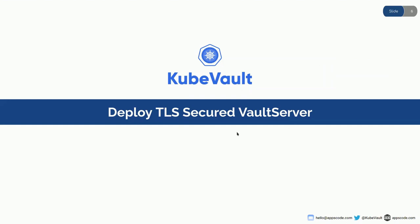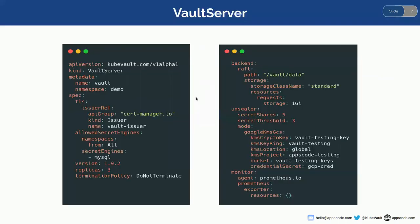Before deploying the Vault server, let's take a look at the YAML file. In the metadata section I provided the name and namespace. In the spec section you can see the TLS configuration — I'm using the Vault Cert Manager. For managing the TLS, we'll need to create an issuer named Vault issuer. In the allow secret engine field, you know Vault uses a policy called WFTM, so you can allow or disallow certain secret engines or namespaces.